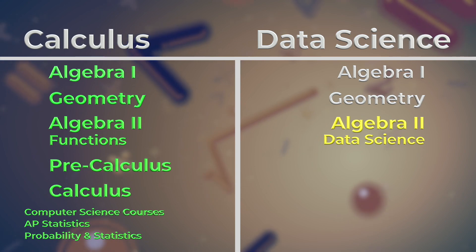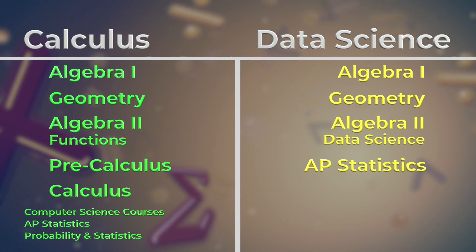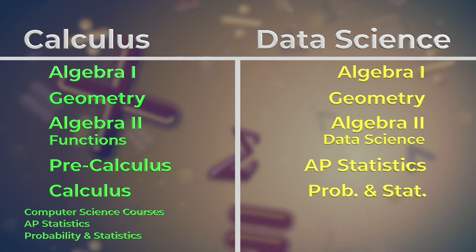In the data science pathway, everyone starts with Algebra 1 and Geometry, then takes Algebra 2 data science, followed by AP statistics, or probability and statistics.